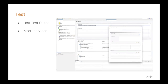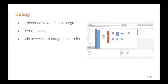Moving on to the testing phase, testing is facilitated by the unit test framework in Integration Studio, which allows you to test implemented flows and build the CI-CD pipeline. It also allows you to create mock backend services for testing — we'll be showing you how in the demonstration. Integration Studio also allows error correction using its inbuilt debugger. You can debug the integration flow either in the embedded Micro Integrator server or with a remote server, and it allows you to add different servers for debugging purposes.